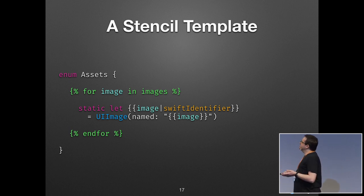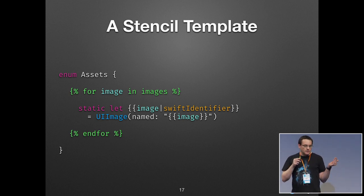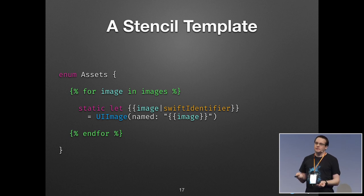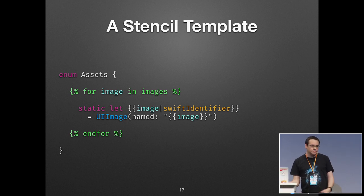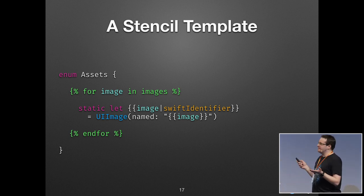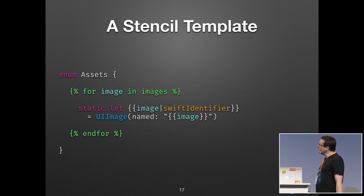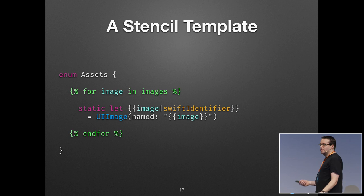You can even use filters — that's the pipe character — because the name of the constant is probably going to be the actual name of the image, but maybe the image name contains dashes or starts with a digit, which wouldn't make your code compile. So we filter the name to make sure it's a valid identifier, replacing every invalid character with underscores, for example. It's really simple to come up with a template, but it can also be really powerful and allow you to customize everything.